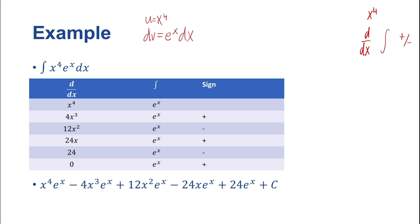We start with the x^4 monomial and differentiate it until it gets to zero. First derivative: 4x^3. Second derivative: 12x^2. Third derivative: 24x. Fourth derivative: 24, which reduces to zero. And if we integrate e^x, that stays e^x, so we've got e^x all the way across in the integral column.